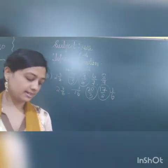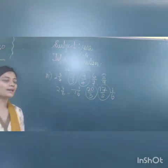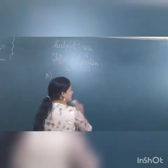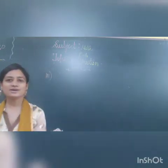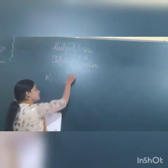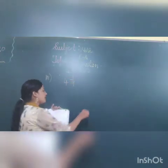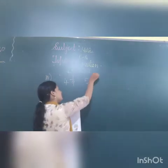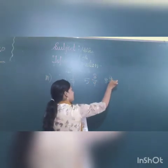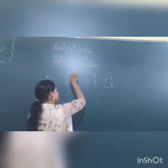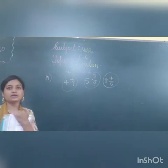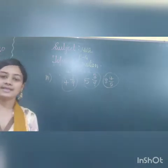Fourth question: circle the mixed fractions. This is much easier because the fraction which has a whole number inside it will be a mixed fraction. In the first row, the mixed fractions are 4 and 1 by 9, 5 and 8 by 9, and 8 and 4 by 5. These 3 numbers in the first row are the mixed fractions. You will check it out for the next row yourself.